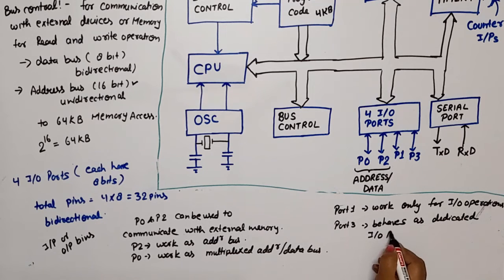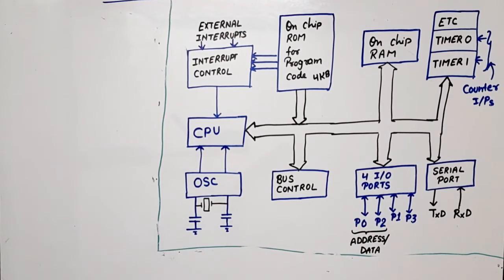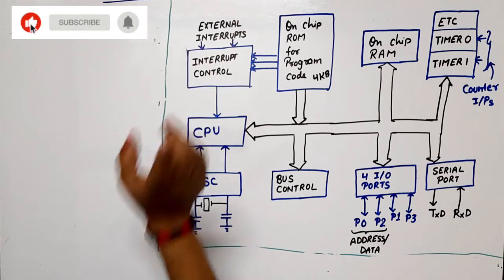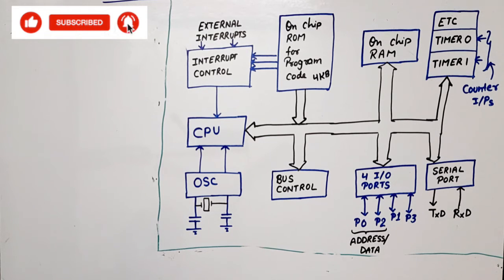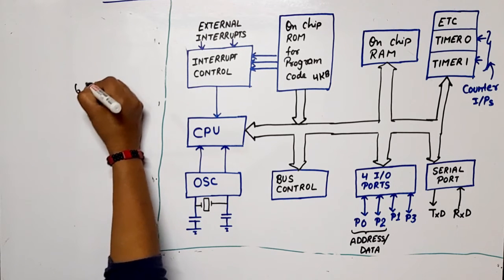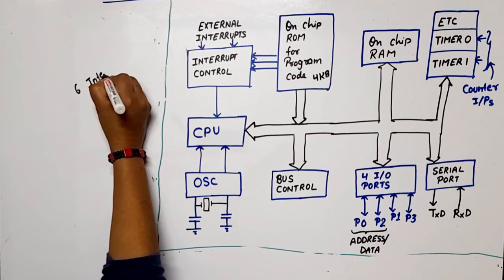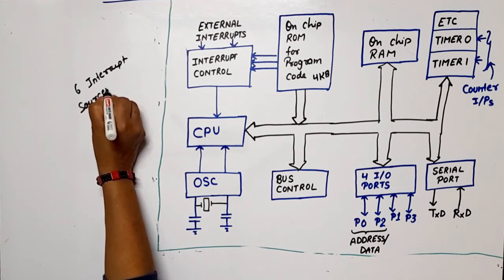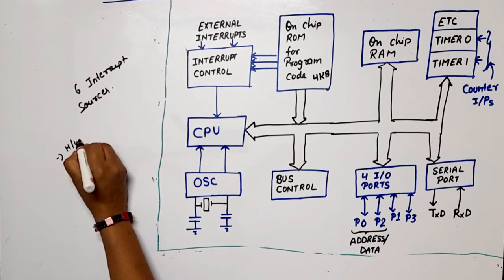Now for interrupt control: as the name suggests, it controls interrupt signals. The arrows indicate these are external interrupts. There are six interrupt sources, and these interrupts can be hardware interrupts as well as software interrupts.